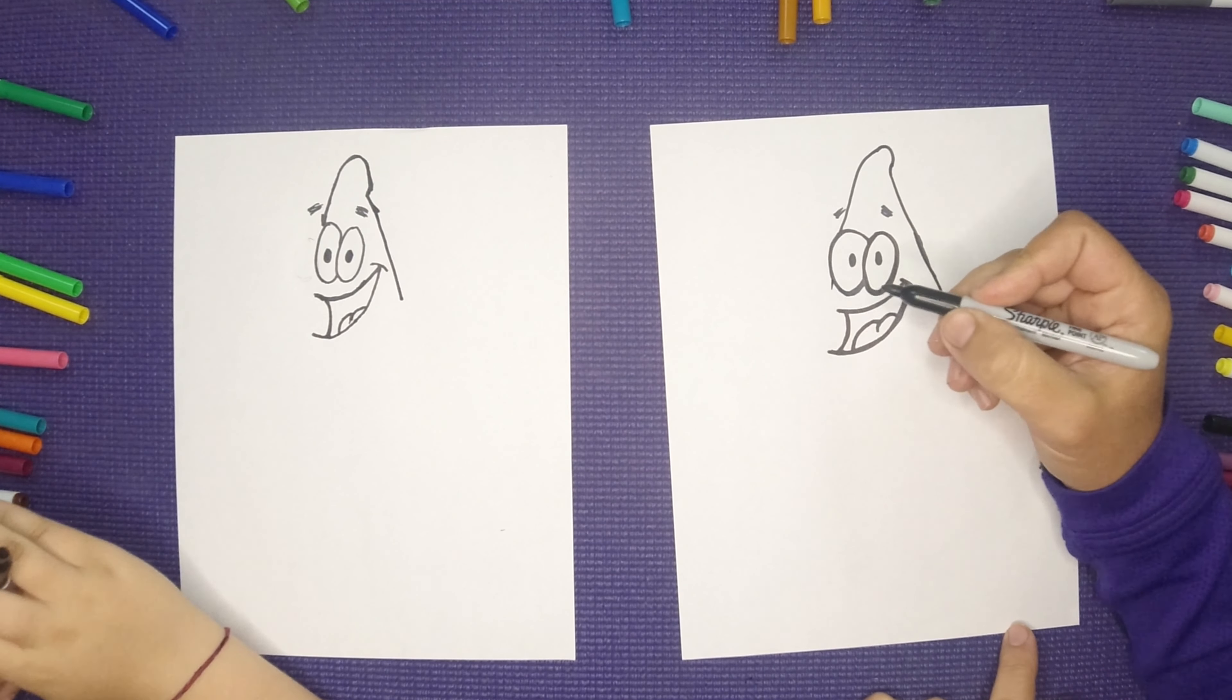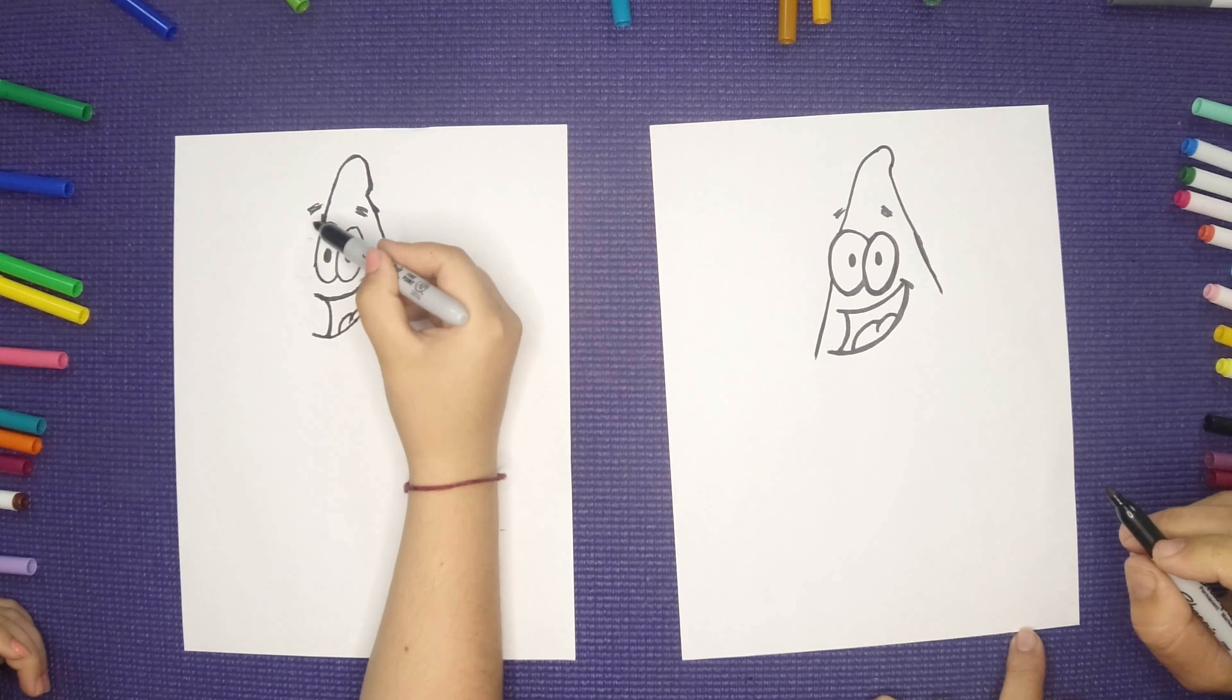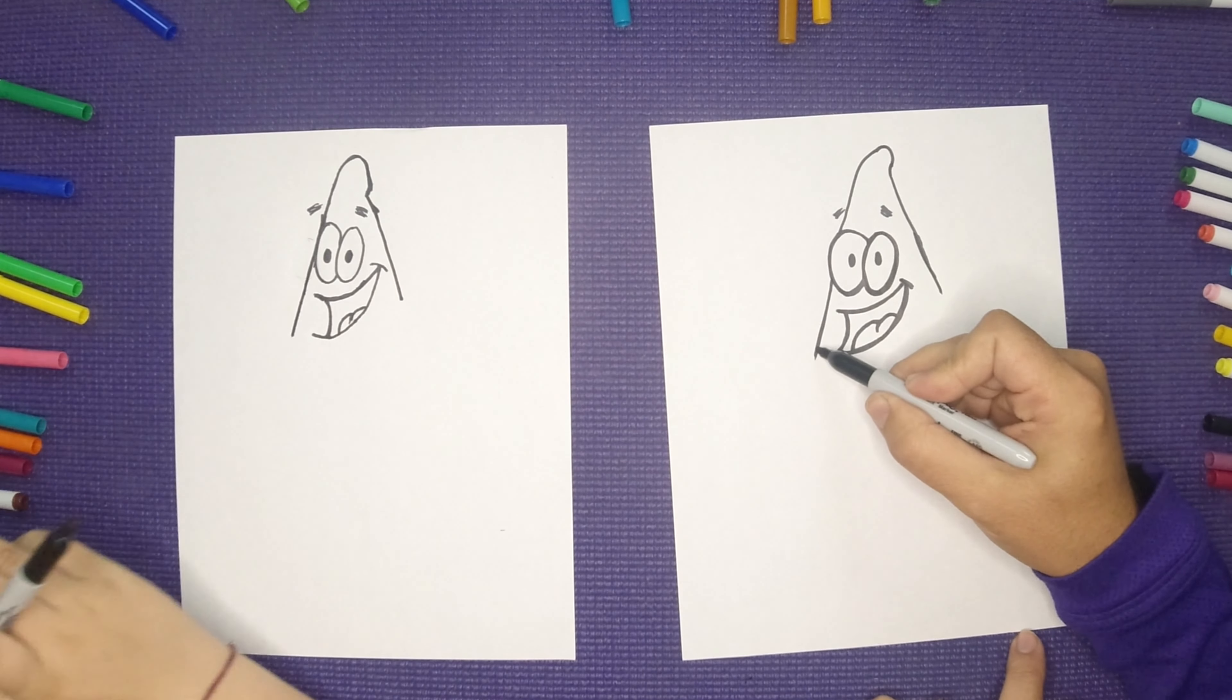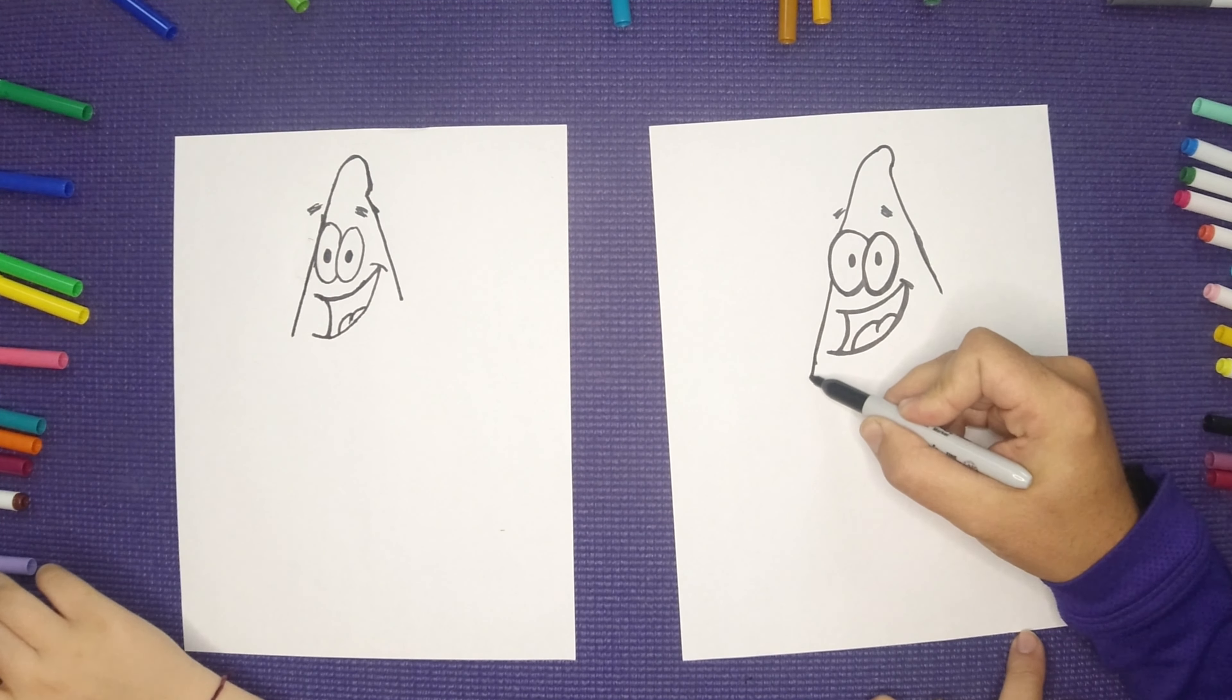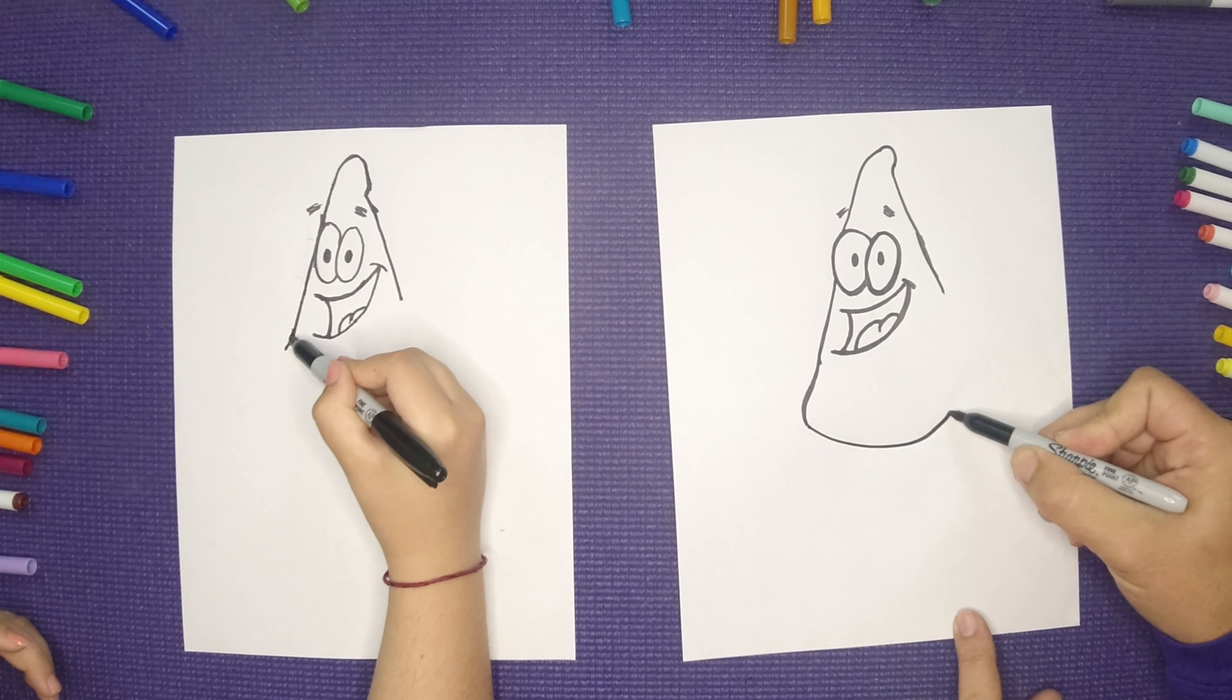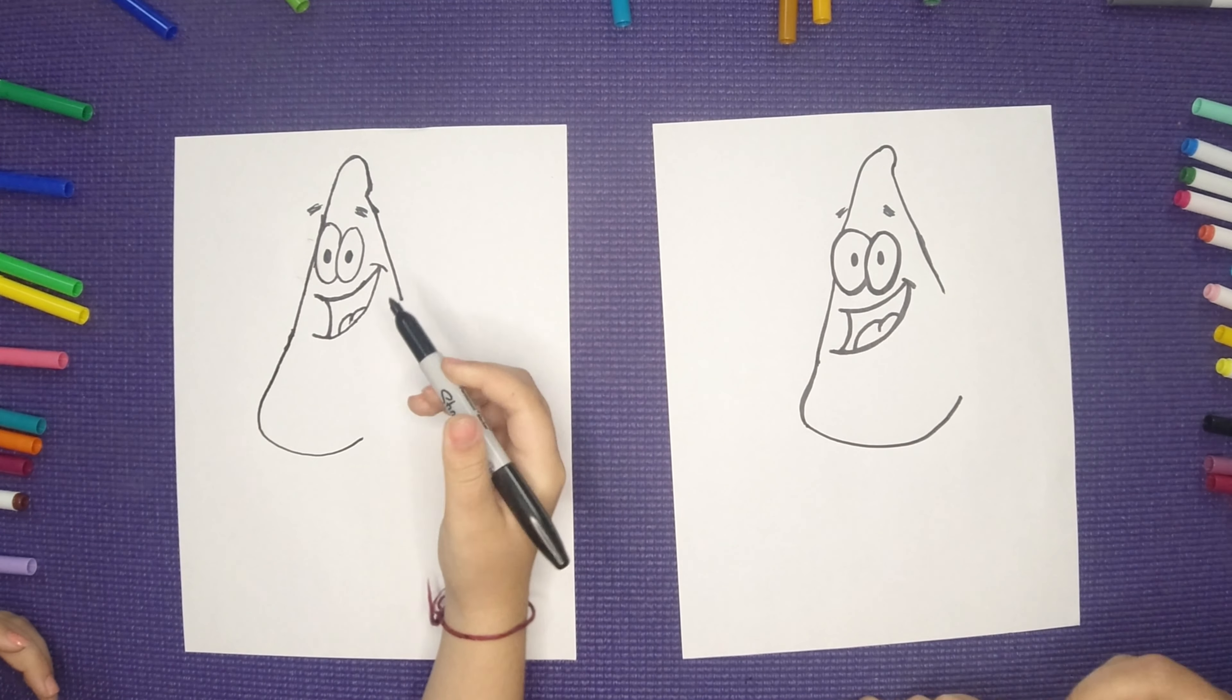And then we're going to come through the other side, through the eye, bulge out a little bit for his tummy. Looks like a big Hershey kiss.